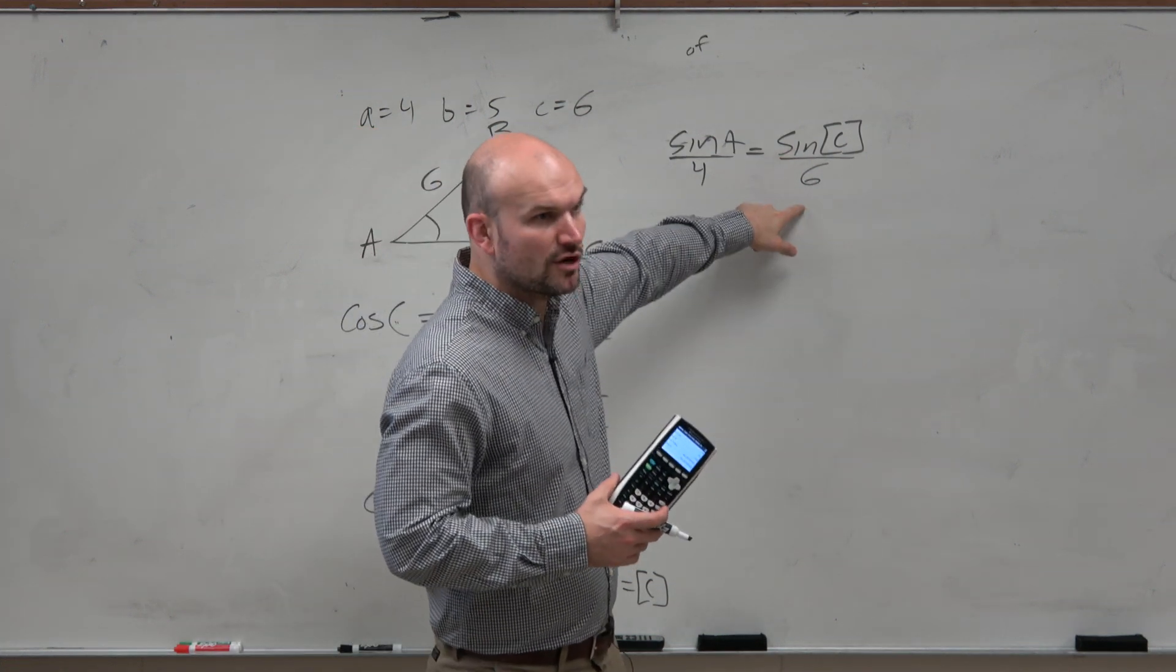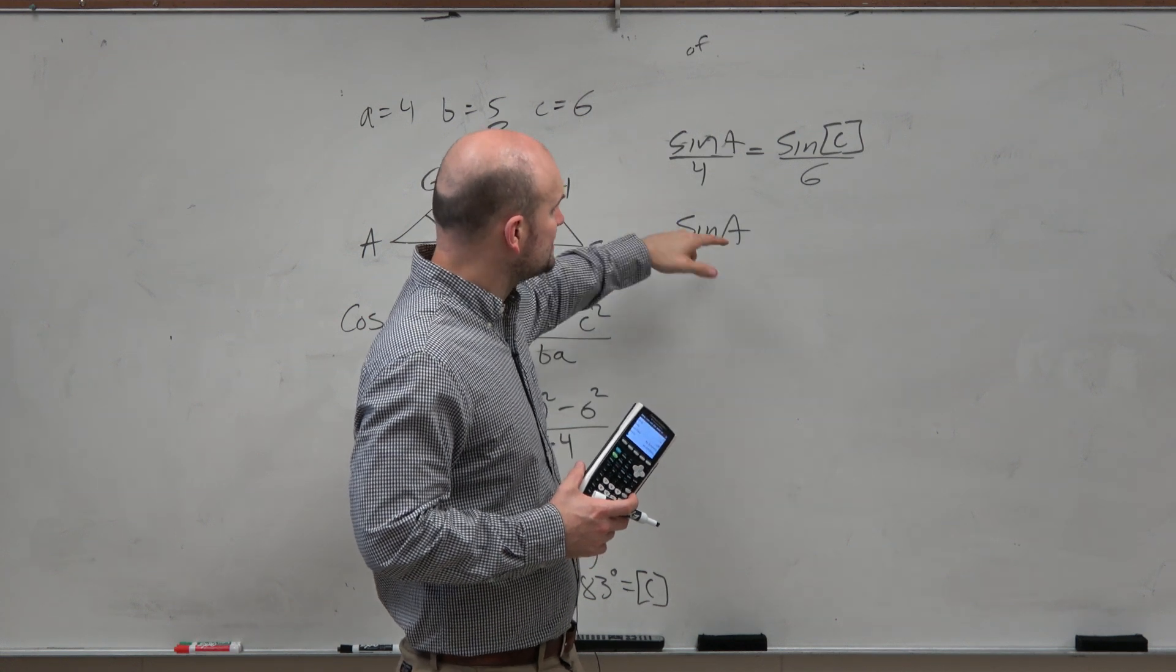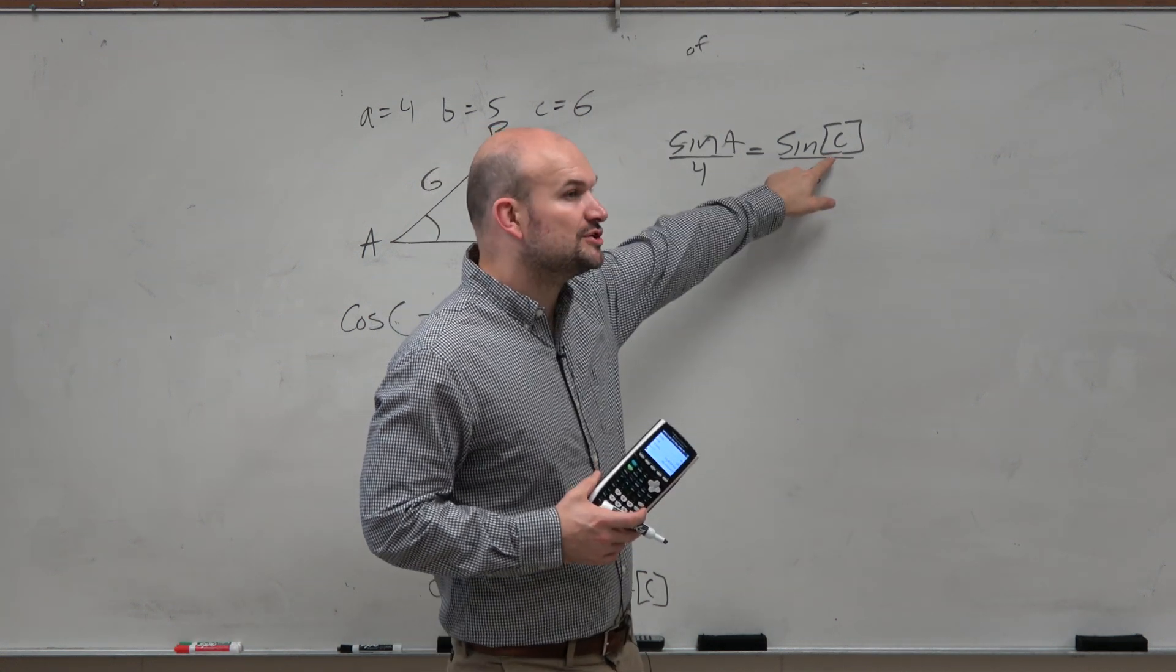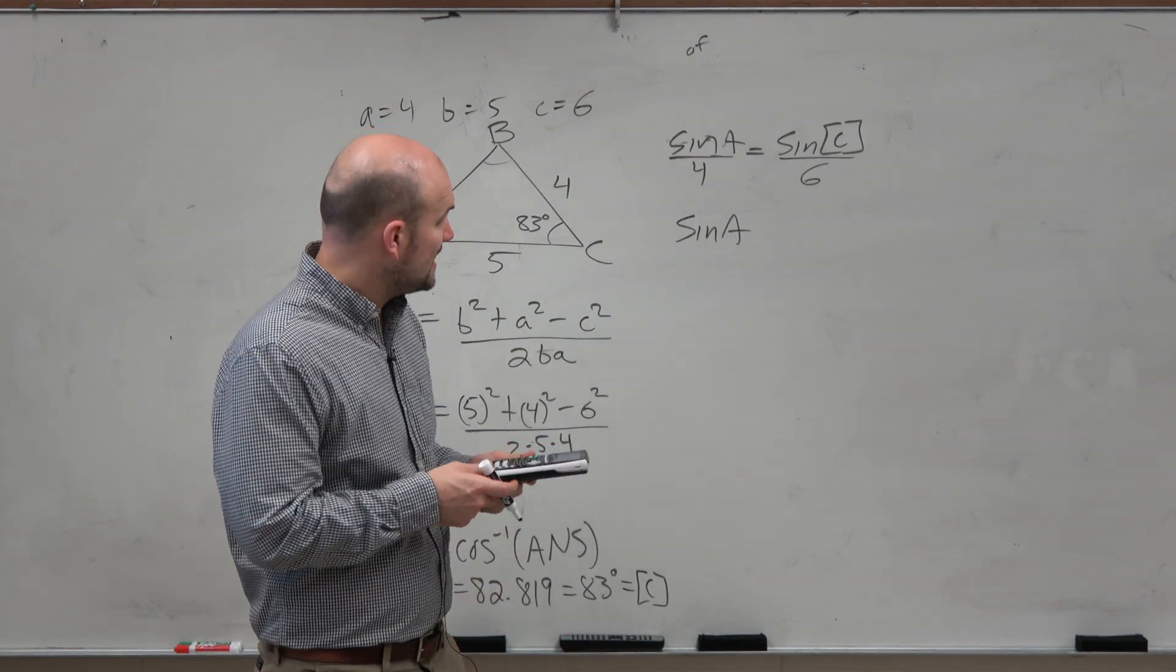Like, literally, you're just multiplying 4 times sine of C over 6. And then take the inverse of that. But you have to make sure you use C. Do not use rounded answers. So I store that.